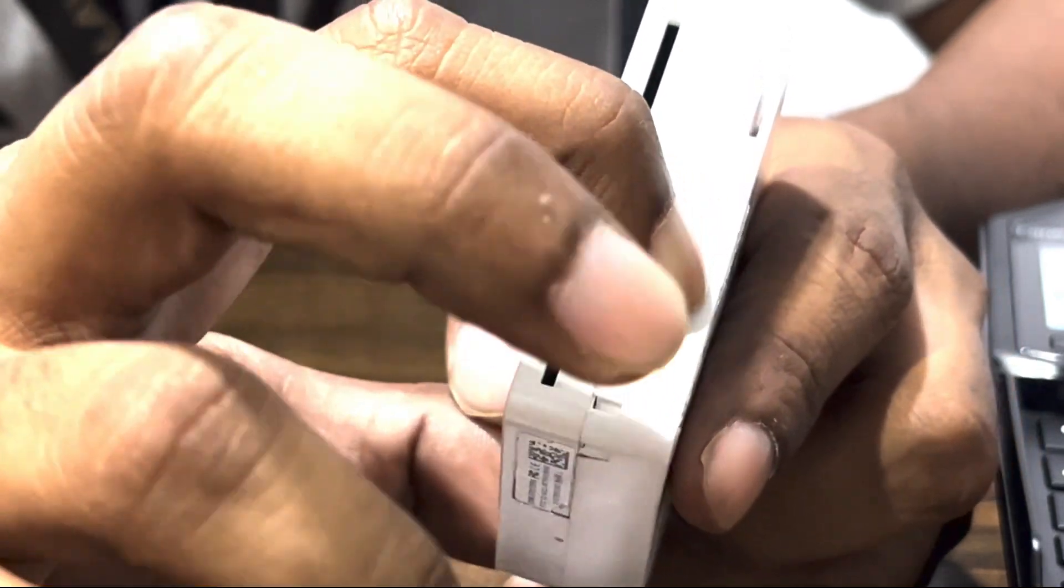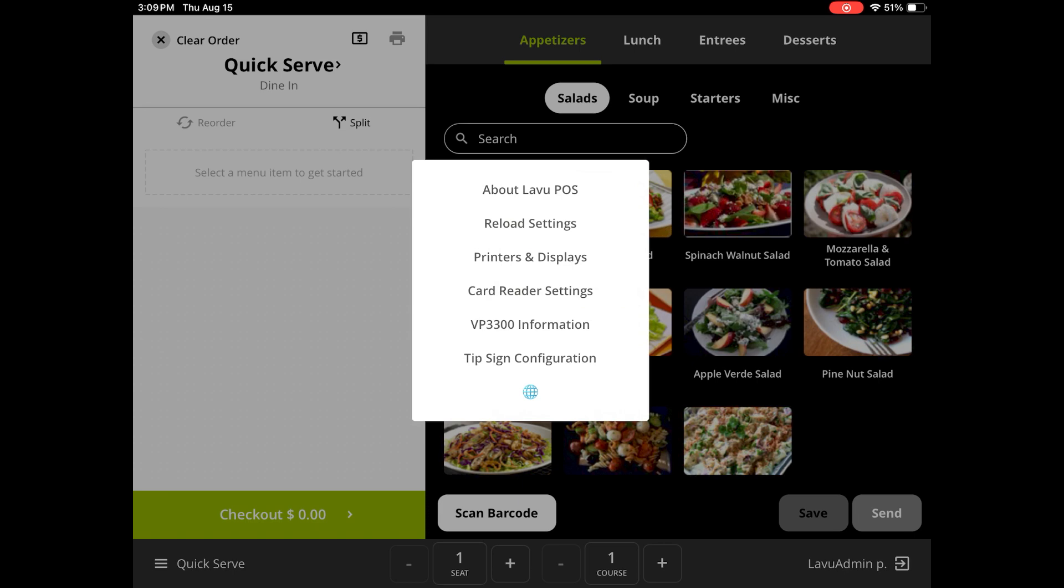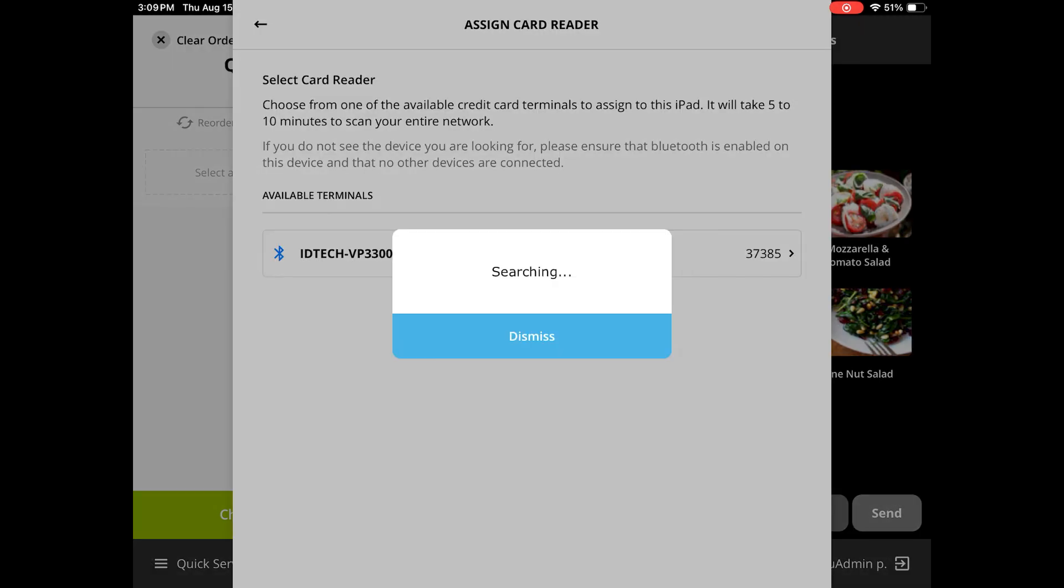You will get a flashing blue light as it powers up. To reconnect your reader, navigate to card reader settings, select VP3300, then scan terminals. You will see a card reader listed here, simply tap on it to connect.